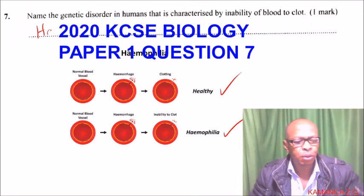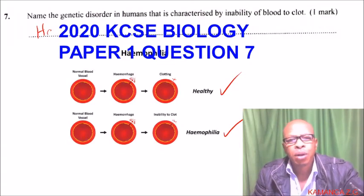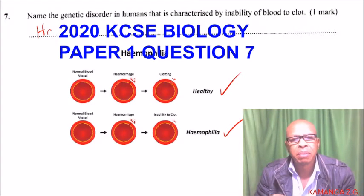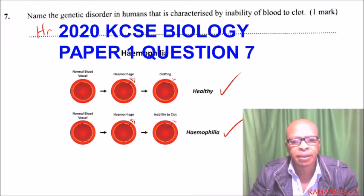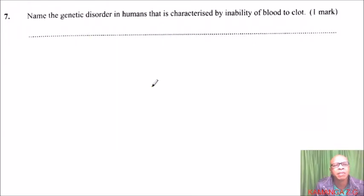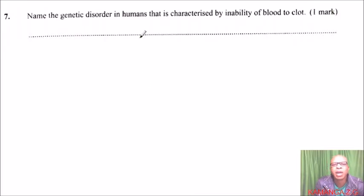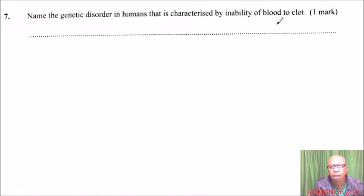Welcome to 2020 KCSE Biology Paper 1, question number seven. The question asks: name the genetic disorder in humans that is characterized by inability of blood to clot.